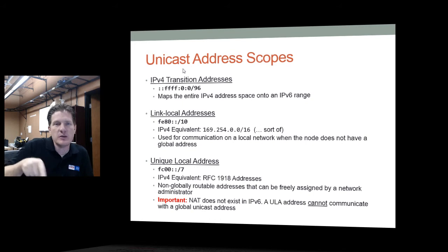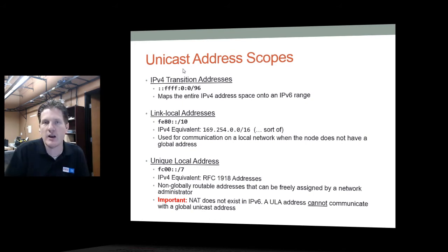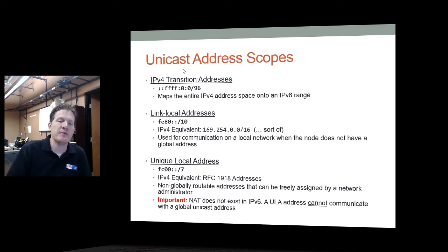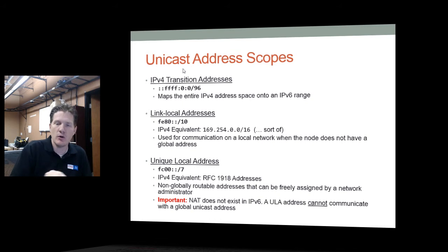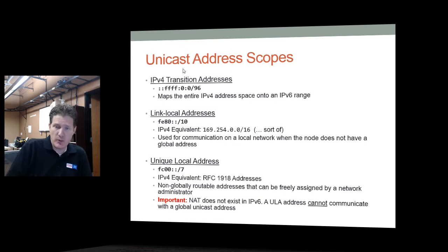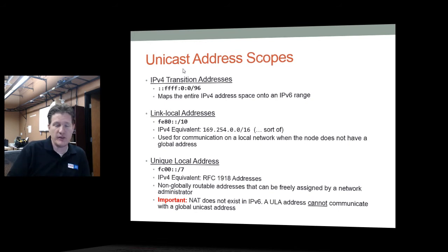Link local addresses are for machines that need to communicate locally but don't need global scope communication. There are also unique local addresses, which are not routable globally — they can be freely assigned by a network administrator on a local network and begin with 'FC00::'. Don't confuse these with NAT — unique local addresses cannot be NATed to a public address. They are local addresses that you want to be unique, non-duplicated, and non-routable.